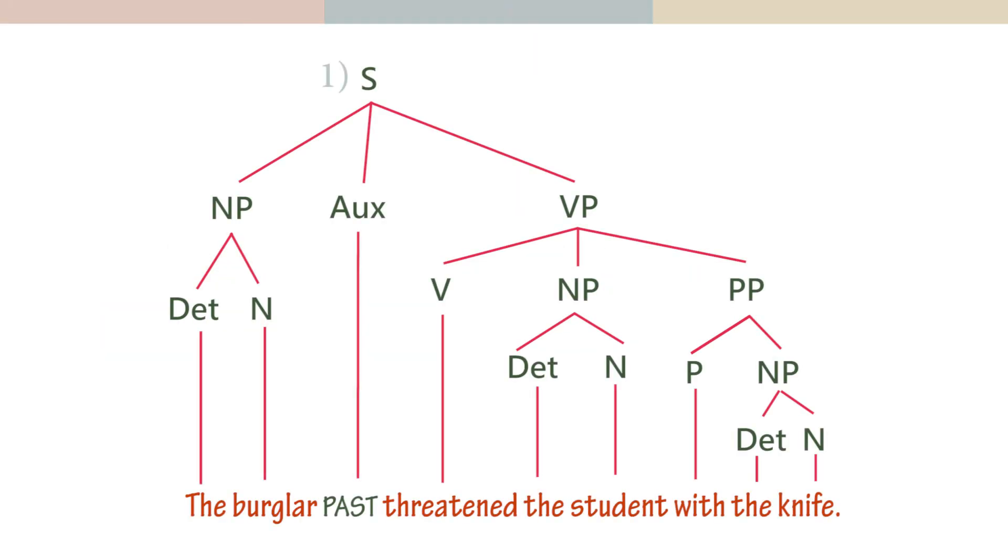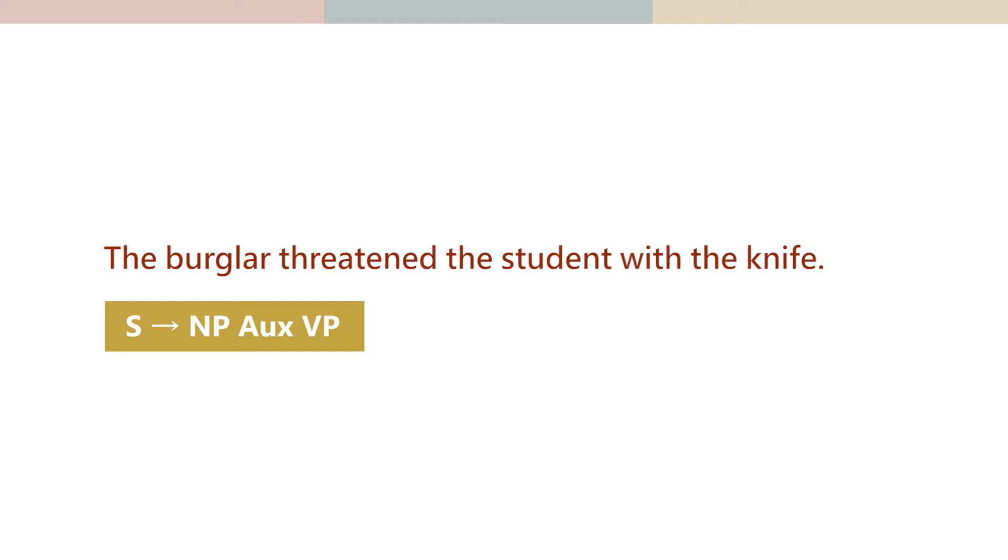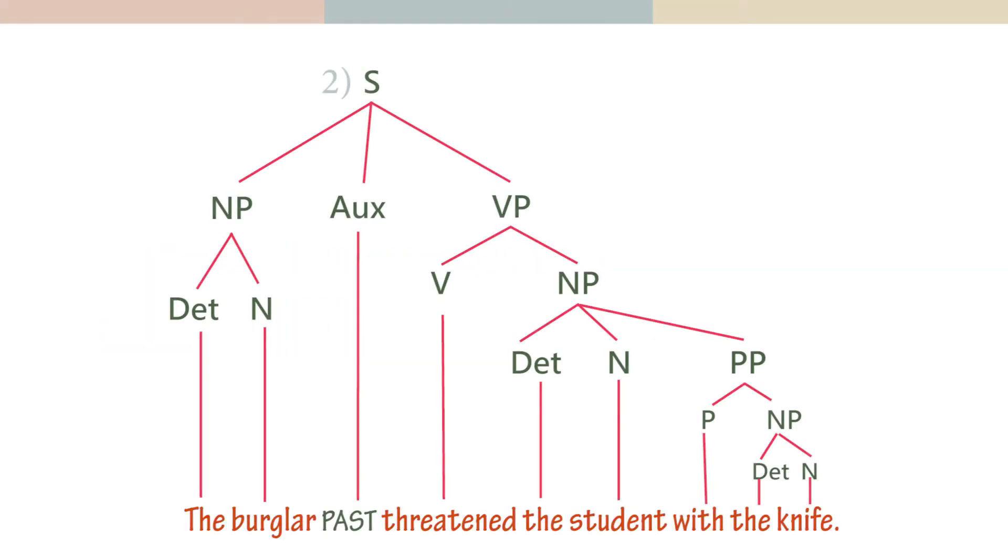And tree one here is the tree diagram or phrase structure tree for meaning one. But meaning two in which the student had the knife can be accounted for by tree two here.